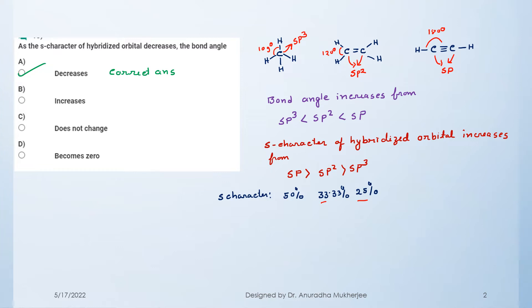That means the correct answer is option A — the bond angle decreases. Hope you understand the explanation.